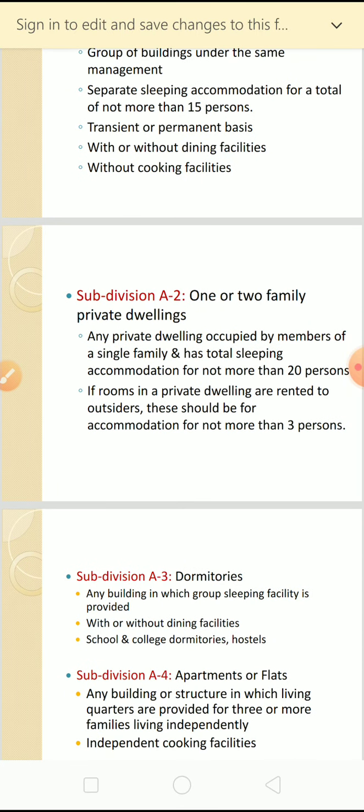A2 is one or two family private dwellings - a private dwelling occupied by members of a single family with total sleeping accommodation for not more than 20 persons. If rented out to other members, it may be not more than three persons. This type of building comes under subdivision A2, which is one or two family private dwellings.